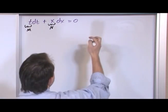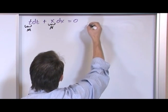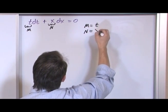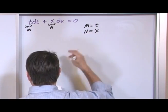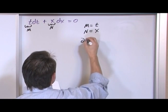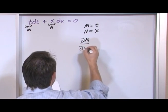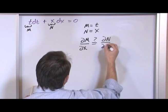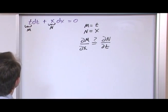And the constraint to test if this is exact is, so let me write this down, m is equal to t and n is equal to x. And the constraint is: is the partial derivative of m with respect to x equal to the partial derivative of n with respect to t?